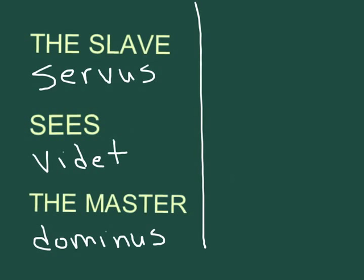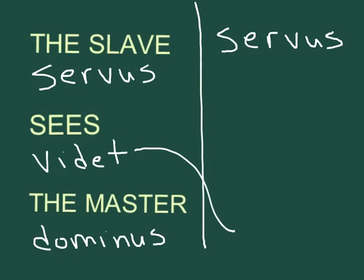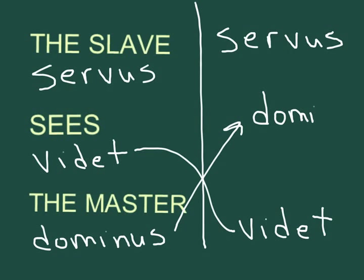If we flip the sentence around, it's no longer 'the master sees the slave' — it's 'the slave sees the master.' The slave as subject is going to be 'servus.' The verb can go at the end — which is actually closer to Latin word order. And because the slave is seeing the master, it's going to be 'dominum.' Subject, direct object — the different ending is what indicates grammatical function in the sentence. It is not word order in Latin.